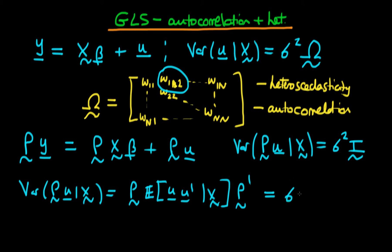So we can rewrite this as sigma squared times P times omega, where omega isn't necessarily diagonal, times P primed. And what we want is we want this to be equal to sigma squared times I. So we want to choose our transformation matrix P such that this is the case.